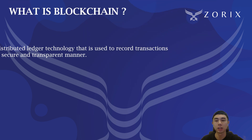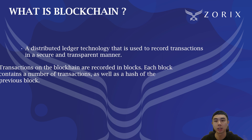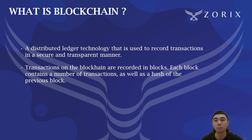So what is blockchain? Blockchain is a distributed ledger technology that is used to record transactions in a secure and transparent manner. Transactions on the blockchain are recorded in blocks. Each block contains a number of transactions as well as a hash of the previous block. This hash is a unique identifier that is used to link each block together.